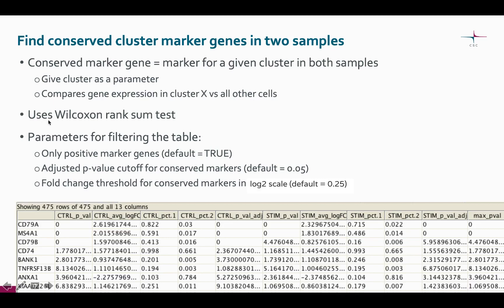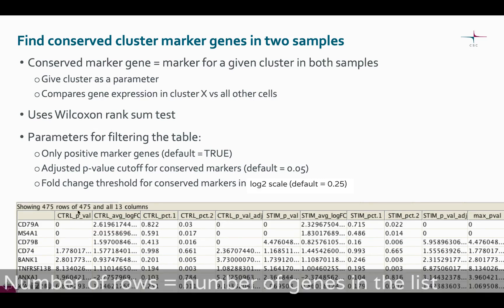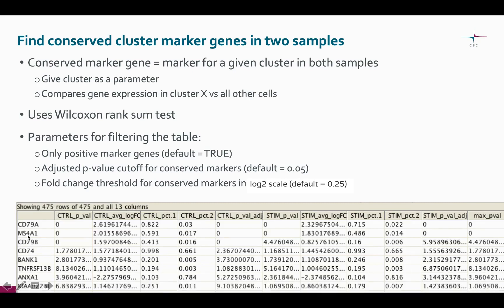A statistical test known as the Wilcoxon Rank-Sum test is used here, and the result table looks something like this. Up here we can see how many genes are in the list. Here we can see the gene names, and here are the p-values and the fold changes.